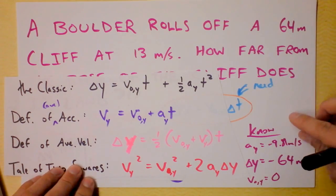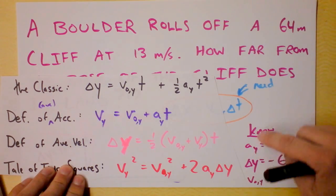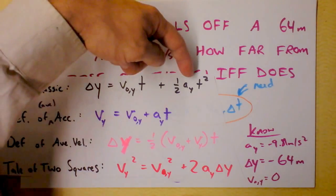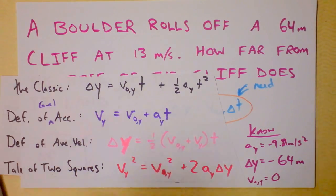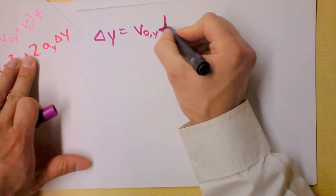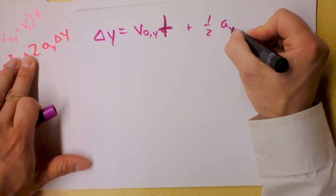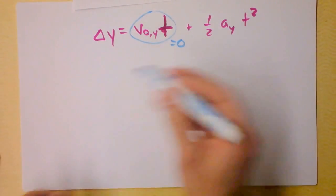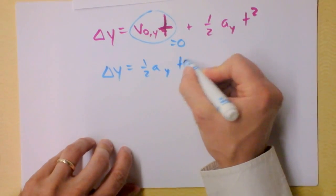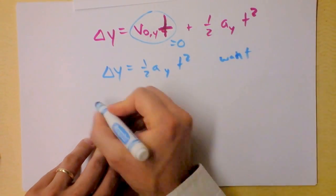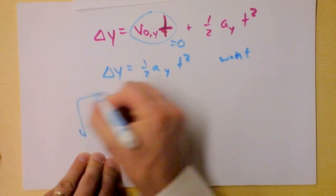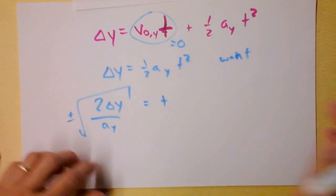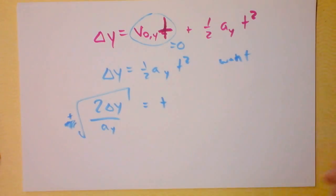We have the initial velocity in the y direction, delta y, ay, and time. The classic kinematic equation will be perfect: delta y equals v-naught-y times t plus one-half times ay times t-squared. Because v-naught-y is zero, that term drops out, and we get delta y equals one-half times ay times t-squared. Solving for time: t equals the square root of two times delta y over ay. We choose the positive root, since the rock hits the ground after we started observing.